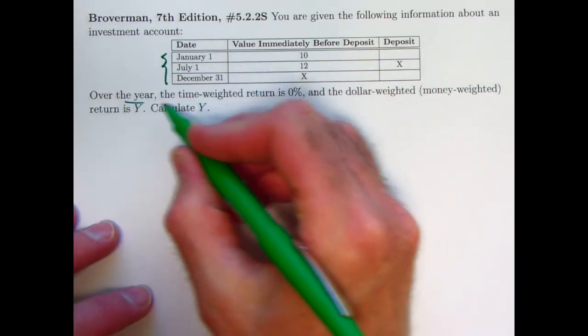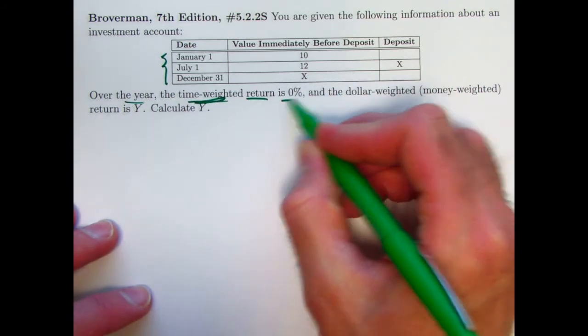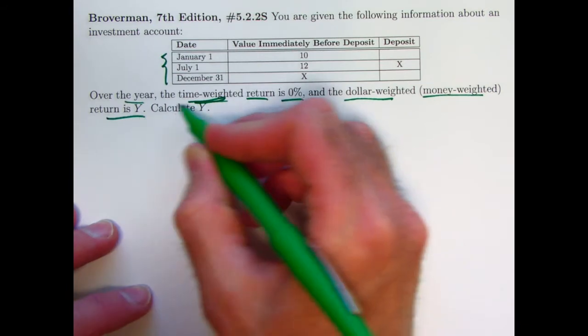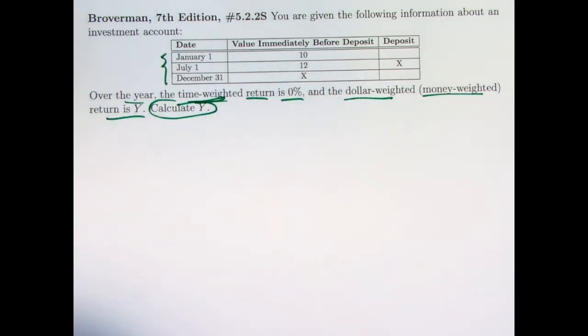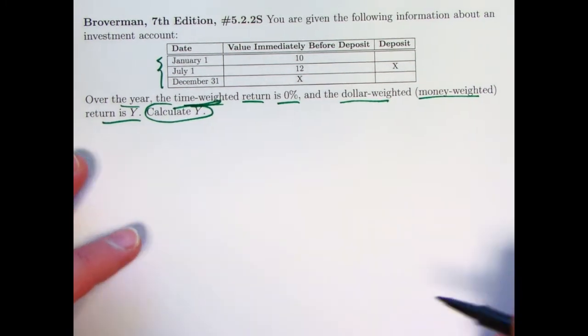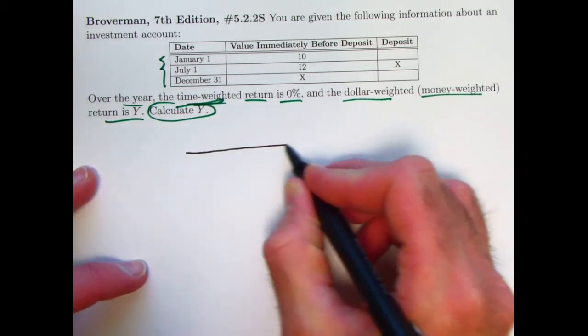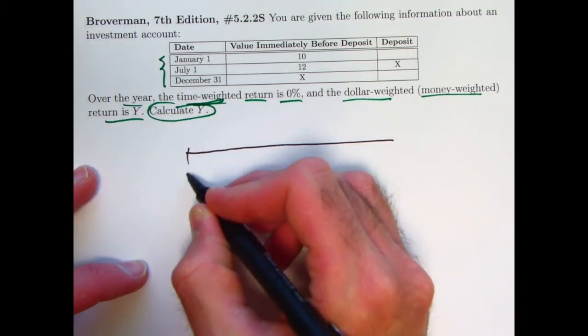We're told that over the year, the time-weighted rate of return is 0%, and the dollar-weighted or money-weighted return is y, and the goal is to calculate y. Okay, you may want to see, based on the last video, if you can pause this video and solve this within a few minutes yourself. I'm going to go ahead and solve it now. I will draw a timeline, but it's simple enough you probably wouldn't have to.